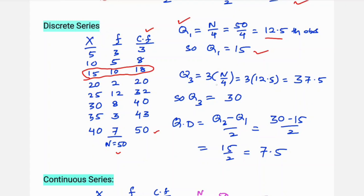Q3 is 3 into n by 4, so 3 into 12.5 equals 37.5. Looking at cumulative frequency, 37.5 falls at 40, so the related observation is 30. So Q3 is 30. The formula is Q3 minus Q1 by 2, so 30 minus 15 by 2 equals 15 by 2 equals 7.5. So this is quartile deviation for discrete series.